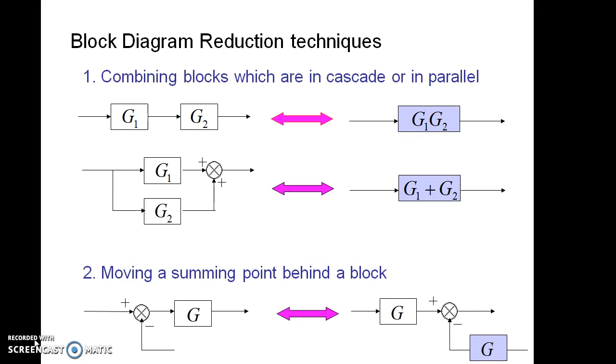The second rule is moving a summing point behind a block. In this case, if the summing point is moved behind a block, the effect of the gain factor G will also be included at the resultant signal. So to avoid that, in the second incoming signal, the gain factor value is to be included to equalize it.